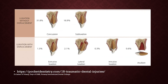Luxation without displacement could be a minor movement of the tooth within the socket leading to concussion, or subluxation where again there is minor movement and widening of the PDL space. Luxation with displacement involves extrusive luxation where the PDL is widened, or the tooth is luxated in a lateral position, or it is intruded, or totally avulsed — which is called avulsion.